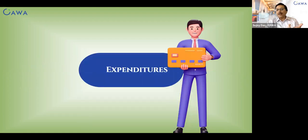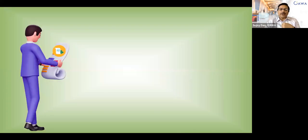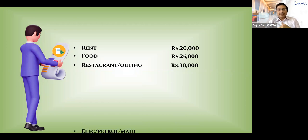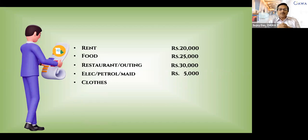Ravi is leading a life with various expenditures. He pays ₹20,000 per month in rent, spends ₹25,000 on food, around ₹30,000 on restaurants and outings, approximately ₹5,000 on electricity, petrol, and servants, and about ₹7,000 on clothes. That makes a total expenditure of ₹87,000 — this is where the problem begins.